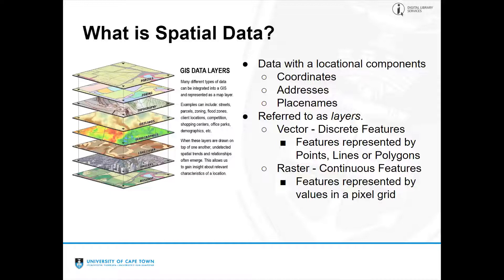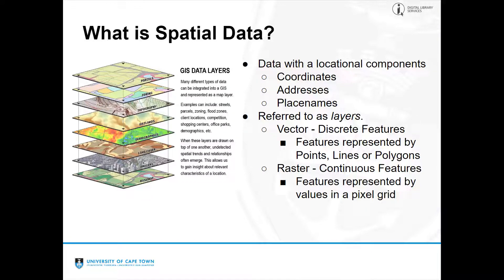What is spatial data? Spatial data is any data that has a locational component — what we traditionally think of as coordinates. Latitude and longitude are the more obvious ones, but a spreadsheet with a list of addresses is also a spatial data layer — you have a reference to the Earth's surface using people's addresses. Similarly with place names: if you have a list of Woolworths locations with their suburbs in a table, that can become spatial data you can symbolize on a map.